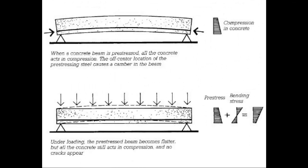A concrete beam with reinforcing steel stretched so that when the concrete cures it actually has a camber — this arch — and then under load it flattens itself out. Putting this type of tension in the steel is referred to as pre-stressing, and there are two ways to do that: pre-tensioning and post-tensioning.